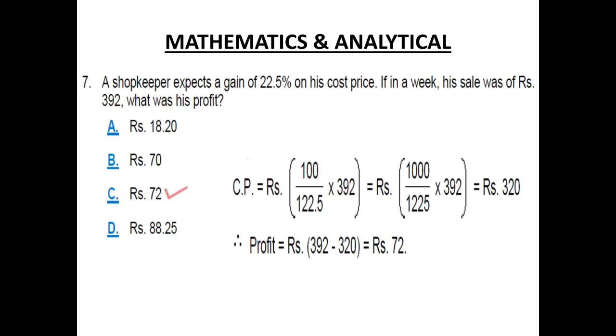Why is it 122.5? Because we are always keeping it as 100 and then we add up the expected gain or the profit. And as the gain was 22.5 so 100 plus 22.5 is 122.5. Multiplying it by 392, we get Rs. 320. Now the profit is equal to Rs. 392 minus 320 which is equal to Rs. 72. Option C.